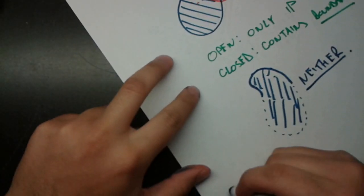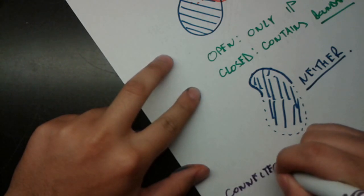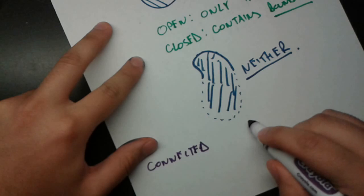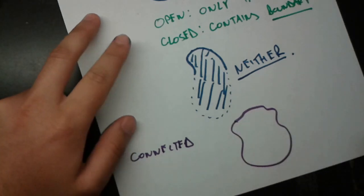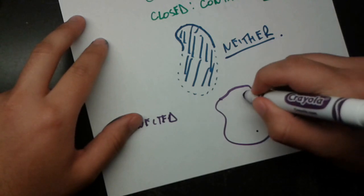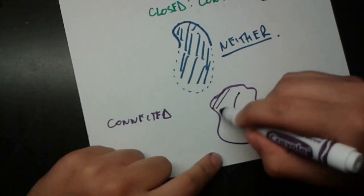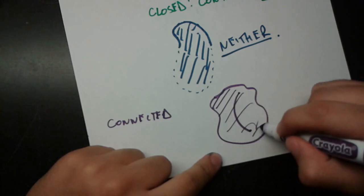So a connected set. A connected set is simply any set, so that when you draw it, no matter which two points you pick, you can always connect them with some curve, and that curve always lies totally inside the set. So we see that this curve lies inside the set.